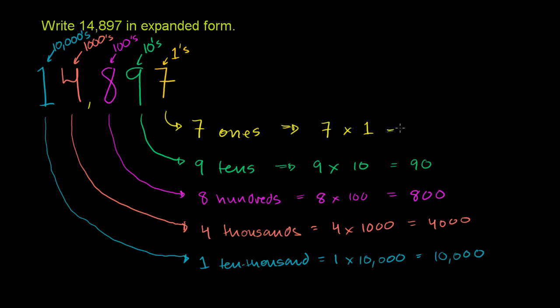Let me write this. 7 times 1 is just equal to 7. So 14,897 is the same thing as 10,000 plus 4,000 plus 800 plus 90, that's the 90, plus 7.